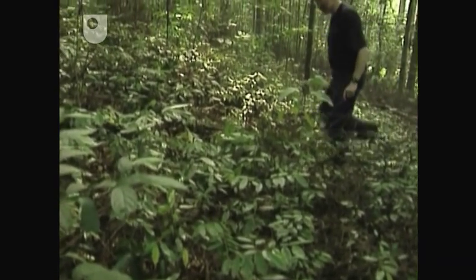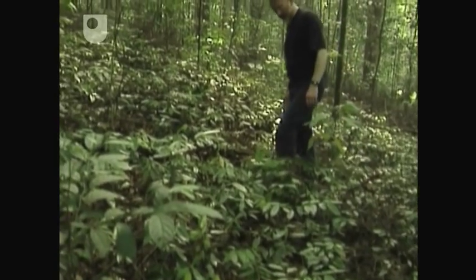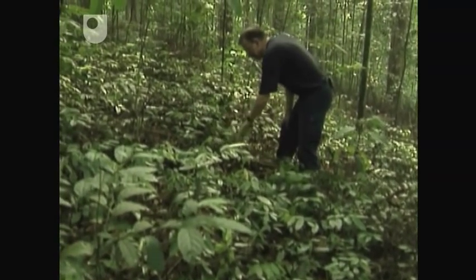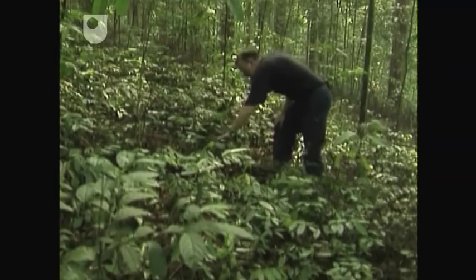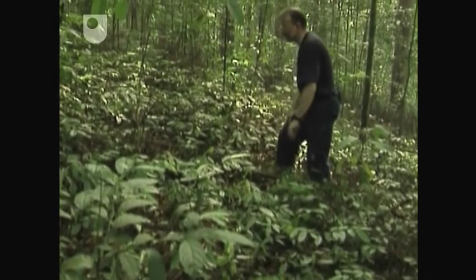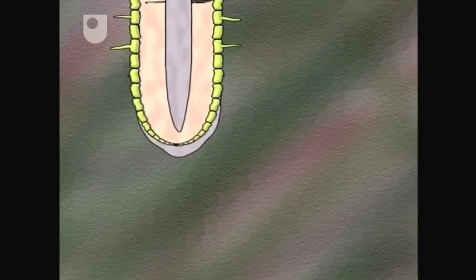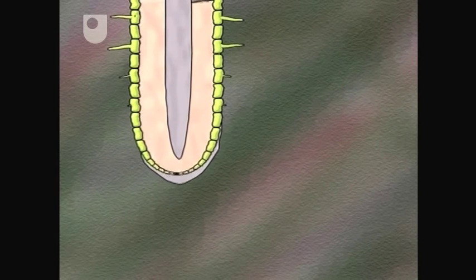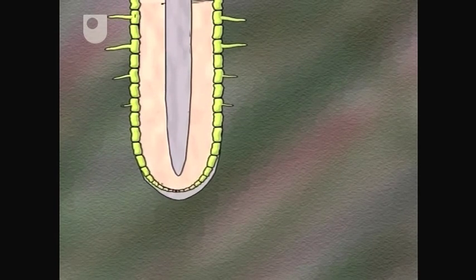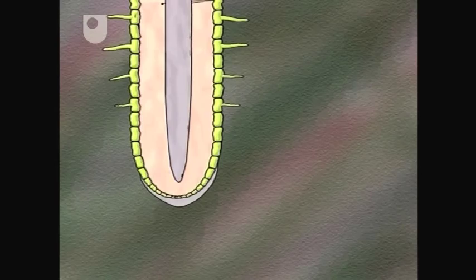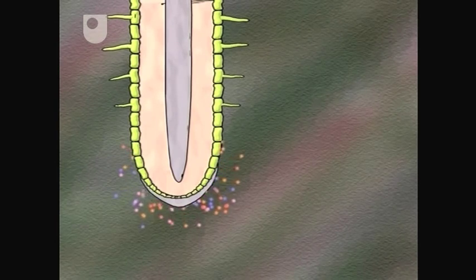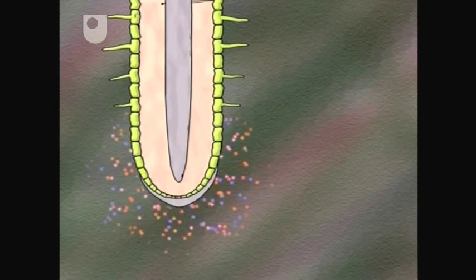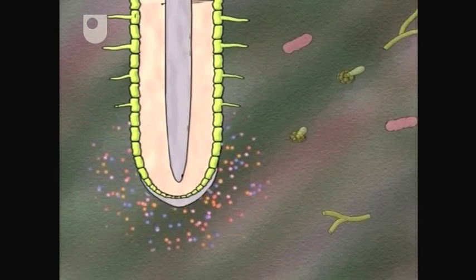But while they're waiting the seedlings might be dependent on others. When they germinate they're going to encounter a web, a wood wide web if you like, of mycorrhizal fungi. As the seedlings root grows down into the soil it releases a cocktail of chemicals. Sugars, amino acids and nutrients, an attractive meal for soil bacteria and fungi.